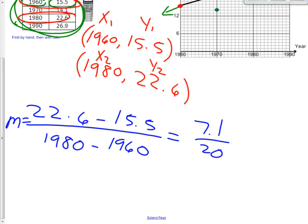7.1 over 20. Now, usually I like slope in fractions, but with this lesson class, I want your slope to be in a decimal form. It's easier to manipulate numbers when we have it in a decimal form, and I want you to round to three decimal places. So when we do this, we get 0.355. So there's my slope. My slope is 0.355.